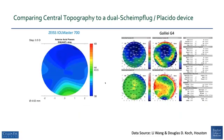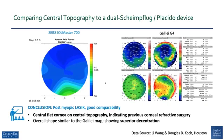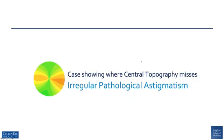Here is a cornea that looks very flat — in fact, it's a post-LASIK cornea. Again, there is very good comparability between devices. The cornea is flat, and the inferior zone is steeper than the central and superior zones, indicating superior decentration of the ablation, seen very comparably with both devices.